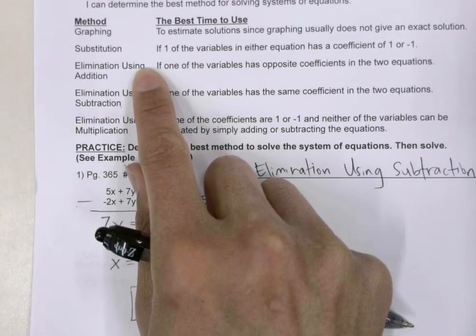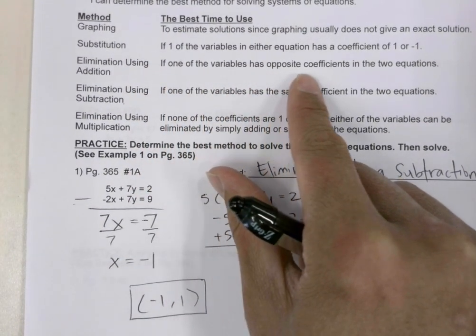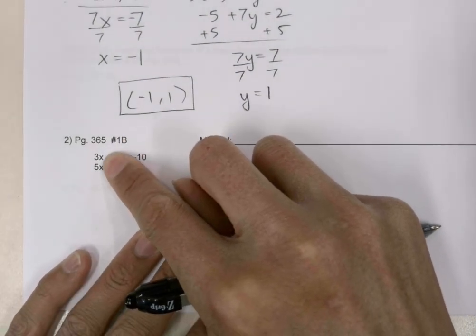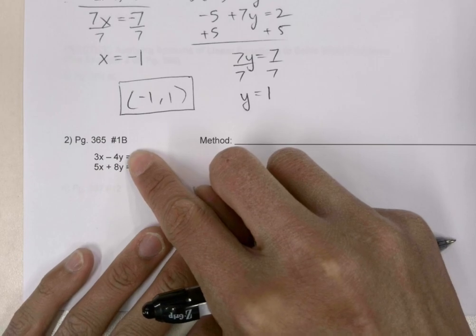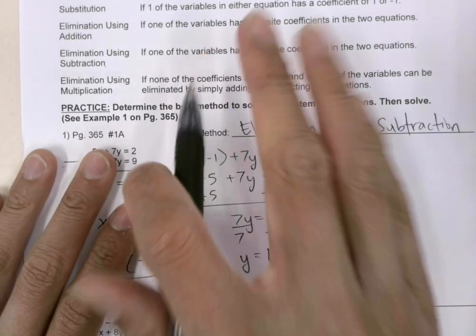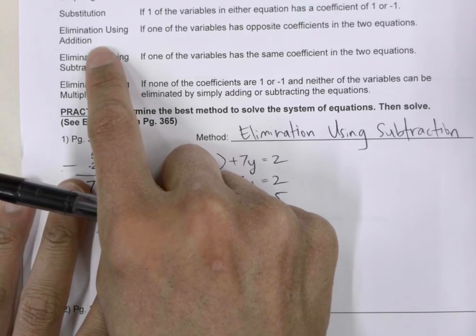Elimination using addition requires the variables to have opposite coefficients. These two are not opposite coefficients, and the negative 4 and the 8 are not opposite coefficients. So we're not going to be using elimination using addition.